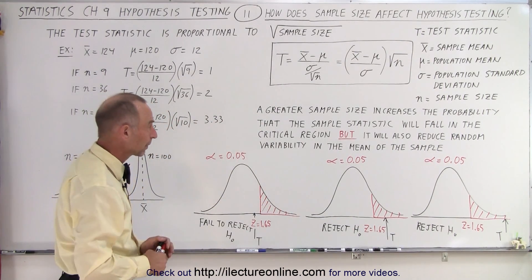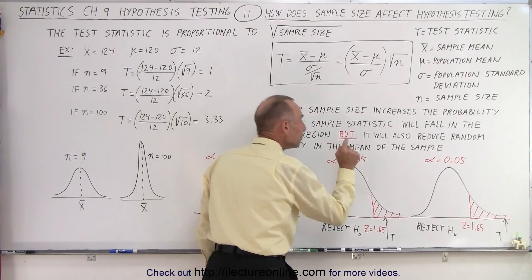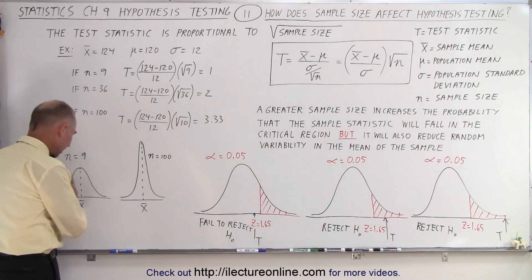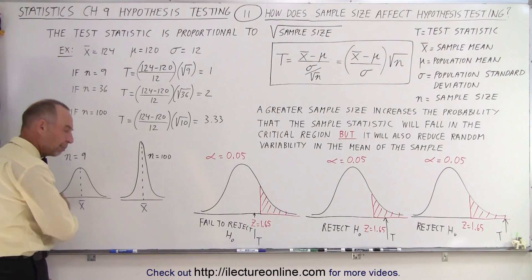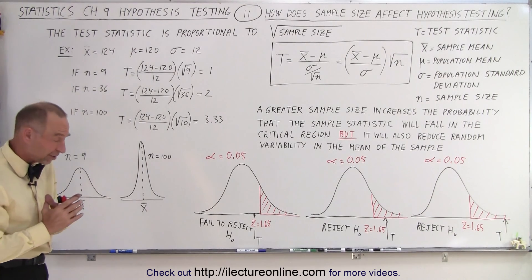But it also will reduce the random variability in the mean of the sample. If you have a small sample size, the distribution is wider and the possibility of getting different values for that small sample size, for the mean of that small sample size, that is large.